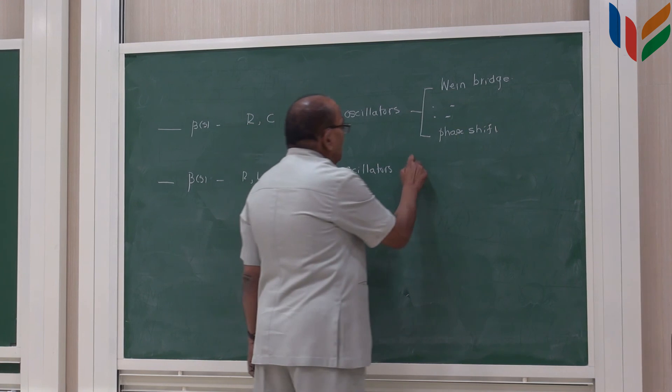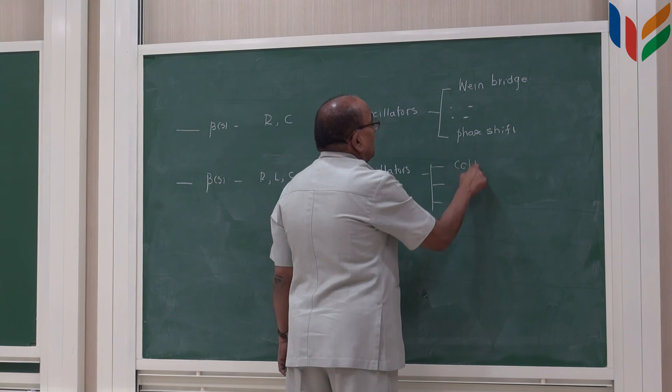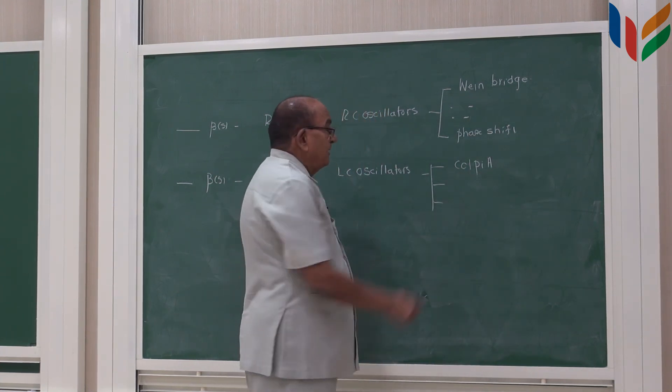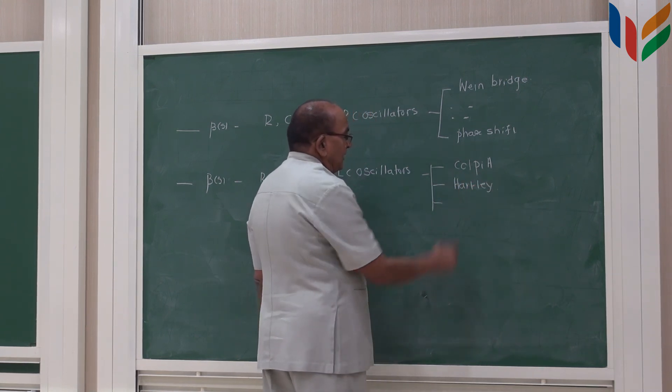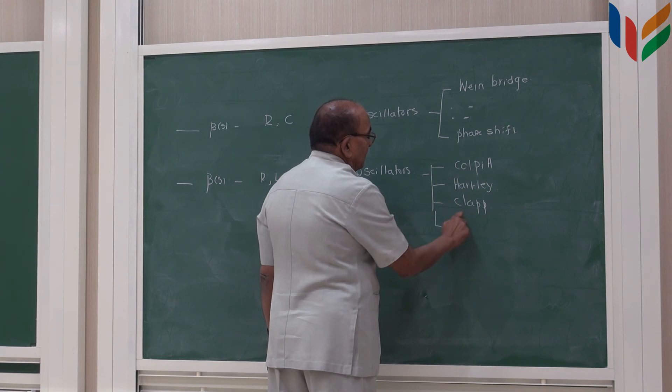Similarly, LC oscillators, you can think about an empty number of oscillators, but there are oscillators called Colpitts oscillators. We will study each one of these in this class. And then we have Hartley oscillator. Then you have Clapp oscillator. Then you have Pierce oscillator.